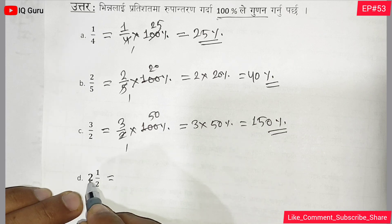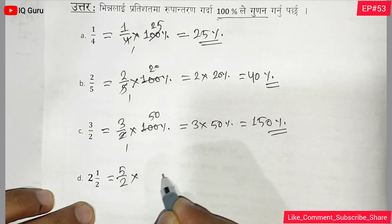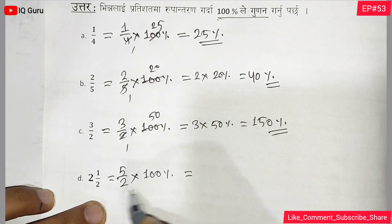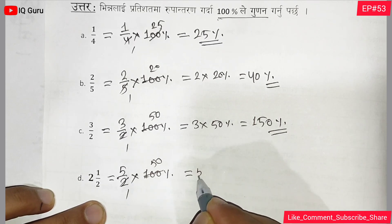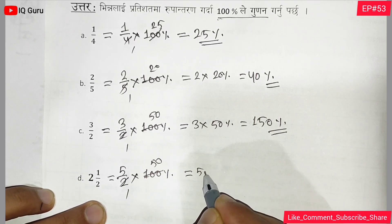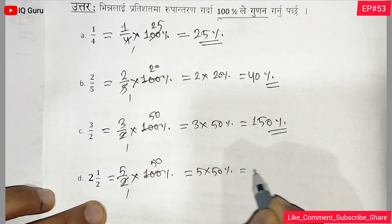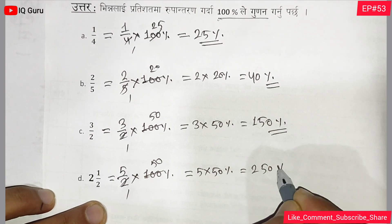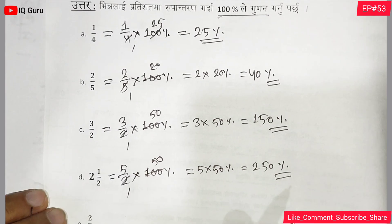For question d: 2 and 1 by 2 into 100 percent equals 250 percent.